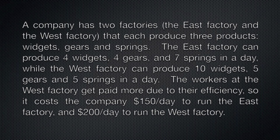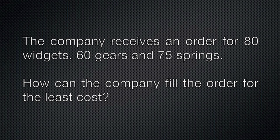The company has two factories — the East Factory and the West Factory — that each produce three products: widgets, gears, and springs. The East Factory can produce four widgets, four gears, and seven springs in a day, while the West Factory can produce ten widgets, five gears, and five springs in a day. The workers at the West Factory get paid more due to their efficiency, so it costs $150 a day to run the East Factory and $200 a day to run the West Factory. The company receives an order for 80 widgets, 60 gears, and 75 springs. How can the company fill this order for the least cost?